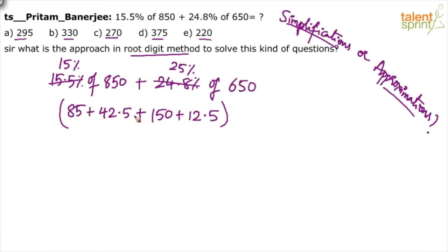Now add all these things. 42.5 plus 12.5 is 55. 55 plus 85 is 140. 140 plus 150 is 290. Looking at the options, 295 is there. So option A is the answer. The rudish method is not applicable here.